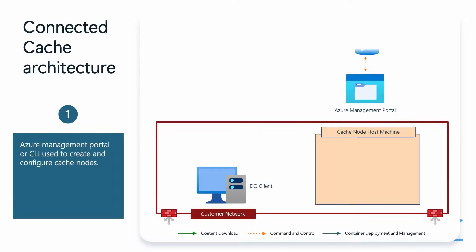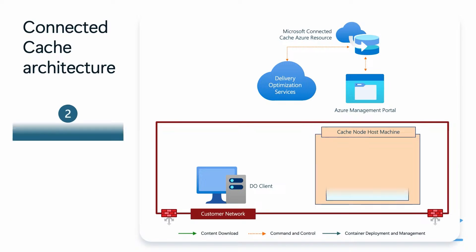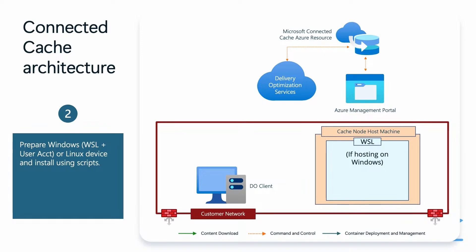On the next slide, you can see first you'll use the Azure Management Portal or Azure CLI to create and configure your cache node. Once you've configured everything, you're ready to deploy your cache node to your host machine. Next, you'll download the OS-specific deployment scripts to your host machine, ensuring that all prerequisites are met. For example, if you're planning to host on a Windows machine, you'll need to install Windows Subsystem for Linux, WSL.